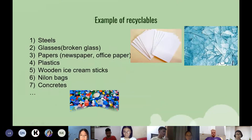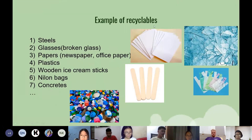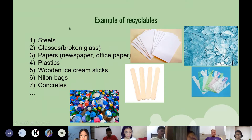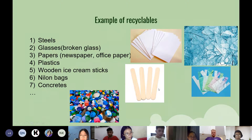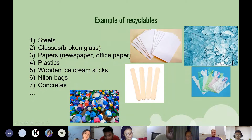I will show you some examples of recyclable items. First, steel. Second, glass. Third, papers like newspaper and office paper. Fourth, plastics. Fifth, wooden ice cream sticks. Sixth, linen bags. And seventh, concrete. And there are many other things we can recycle.